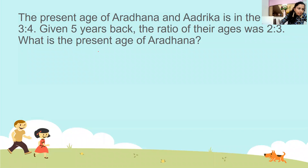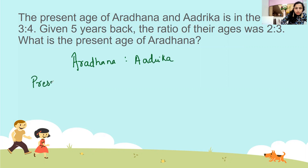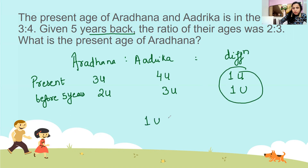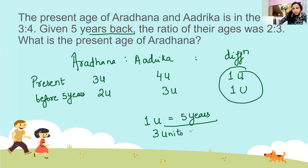Next question: the present age of Aradhana and Adhika — their ratio is 3 units to 4 units, and the difference is 1 unit. Five years back the ratio was 2 units to 3 units, and the difference is also 1 unit. You can see the difference is the same, so 1 unit equals 5 years. The present age of Aradhana is 3 units, which is 15 years. Just that — and you can check it using algebra.